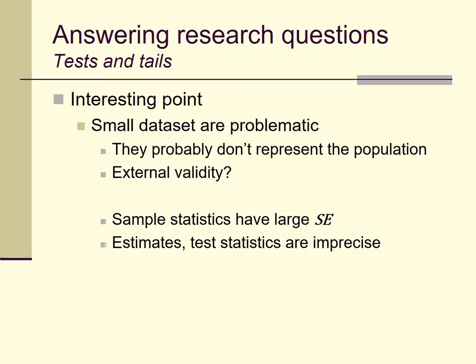Small datasets are problematic for all sorts of reasons. One reason is that we have very good reason to think they're not going to be representative of the population they're drawn from. The population being studied here is people who drink alcohol — a pretty large and diverse group. It's unlikely, at a conceptual and probabilistic level, that ten people brought into our laboratory could be at all well representative of that broad population. So one reason we don't like small samples is that they're unlikely to be representative, and thus any claims we make about the population are suspect — the external validity of these claims is questionable.